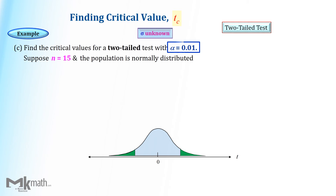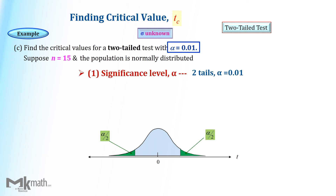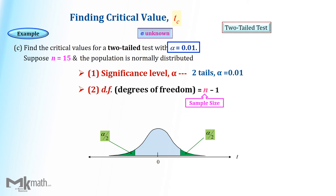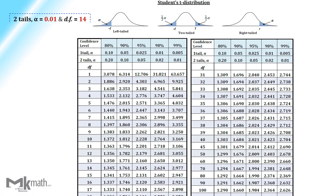Step 1: identify the significance level 0.01 as two-tailed alpha. Step 2: find the degrees of freedom by subtracting one from the sample size 15, which is 14, then look up the table. First, locate 14 degrees of freedom, then select 0.01 from the two-tailed alpha row. The intersection of those is the t-score 2.977.